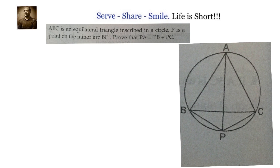To solve this problem, we will use properties of circles, properties of equilateral triangles, and also congruency, because we need to prove PA equals PB plus PC. The idea is to transfer the PC length onto an extension of BP, then use properties of the equilateral triangle and congruency to prove PA equals BQ, where BQ is BP plus PQ and PQ comes from PC.